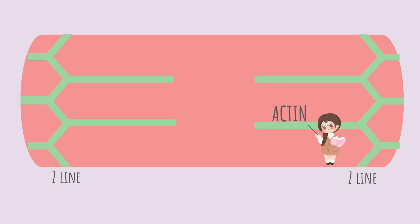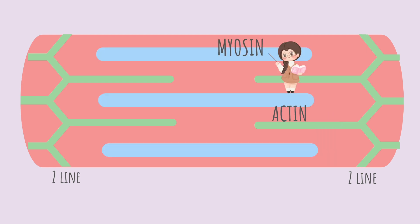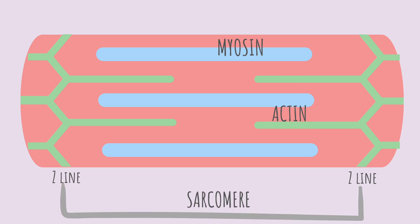Here we have our Z lines. Attached to our Z lines, we have actin. Actin is known as the thin and light protein. Between the actin, we have myosin. Myosin is the dark and heavy protein. The point between the two Z lines is called your sarcomere. The sarcomere is known as the functional contractile unit, meaning this unit or sarcomere has the ability to contract.